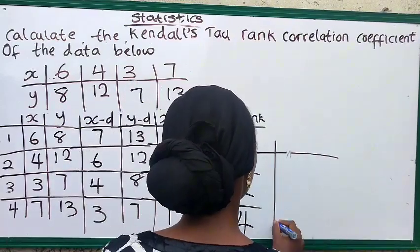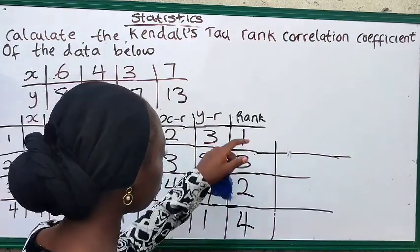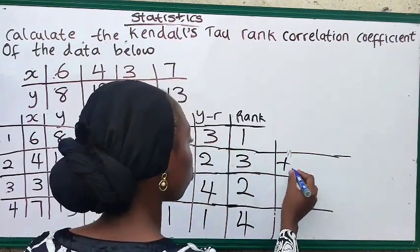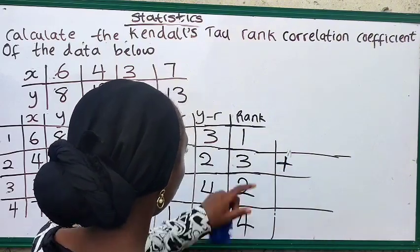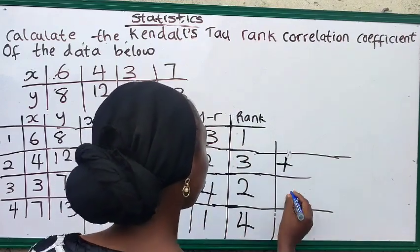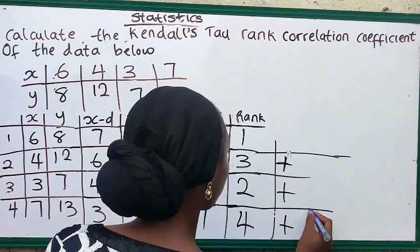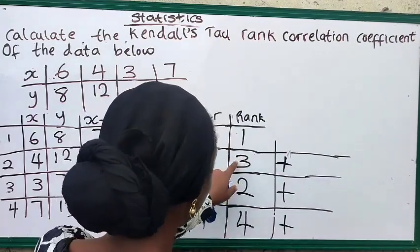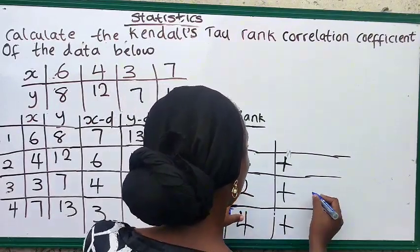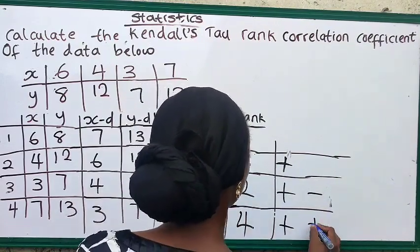So after doing that, we are now going to find our number of discordants and our number of concordants. So we start with number 1. Now 3 minus 1 is 2, that's plus, it's a plus 2. We are going to just put plus here. We are starting with 1, right? So the next one is 2 minus 1 is also 1, so it's plus. 4 minus 1 is 3, that's a plus. So the next one we are going to do for 3 as well. 2 minus 3 is minus 1, that's minus. 4 minus 3 is 1, that's a plus.